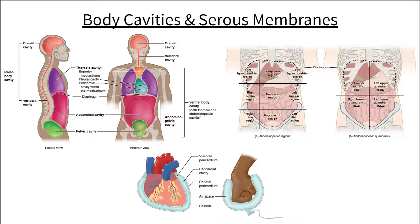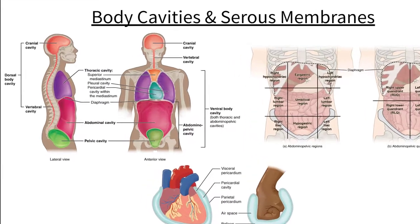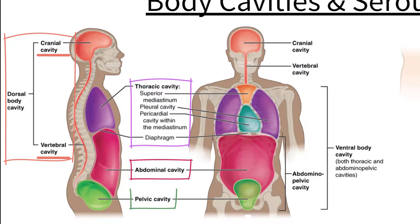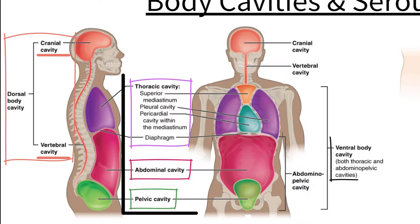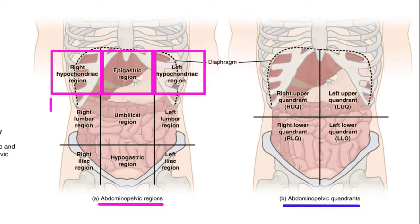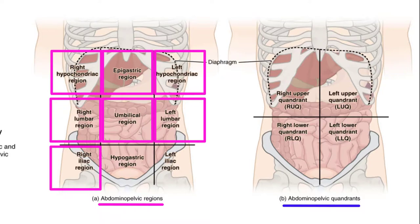Just as we can split the body into planes, we can also section off parts of the body into cavities, regions, and quadrants. The dorsal body cavity, seen in orangish red, comprises the brain and spinal cord which sit in the cranial and vertebral cavities. We have the thoracic cavity, the abdominal cavity, and the pelvic cavity, all of which together make up the larger ventral body cavity. We can break up the abdominal cavity into regions: the right hypochondriac, epigastric, left hypochondriac, right lumbar, umbilical, left lumbar, right iliac, hypogastric, and left iliac regions.